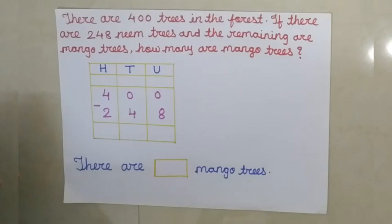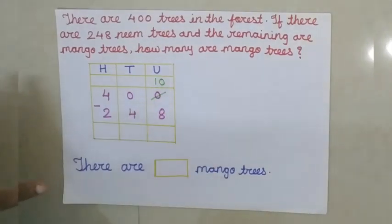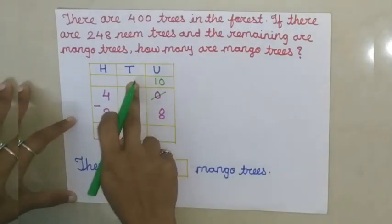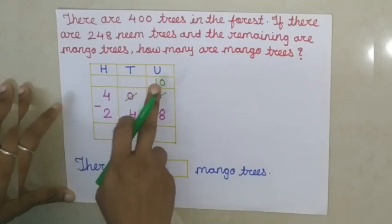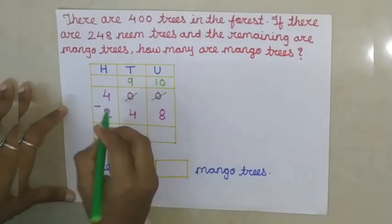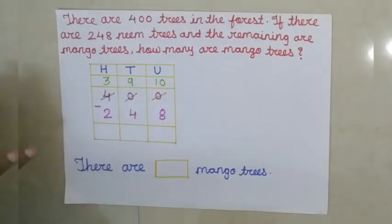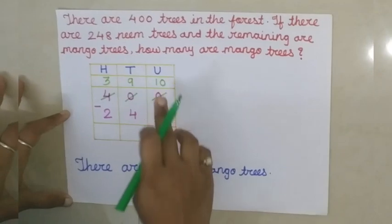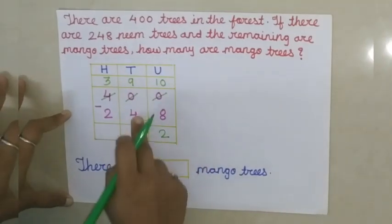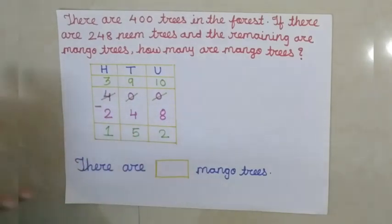Let's begin children. We will start from the units place. Here, 0 is there, so take 10. Here, 10 should come, but this 10 is given 1 to the units. So here will be 9, and in the hundreds place, we will write 3 because hundreds helped them. So start writing the answers: 10 minus 8 is 2, 9 minus 4 is 5, 3 minus 2 is 1. The final answer is 152.